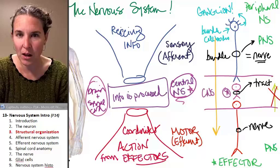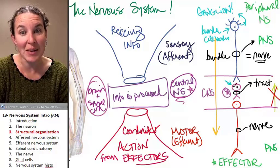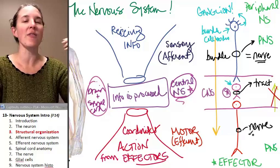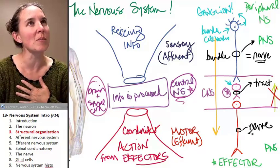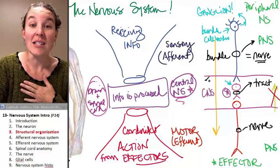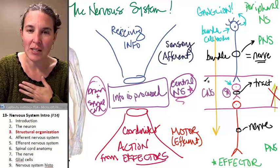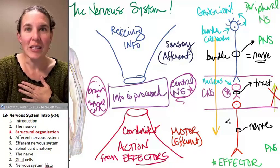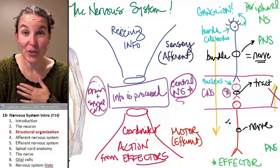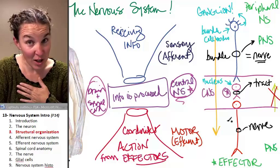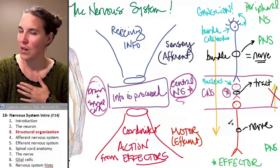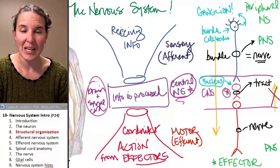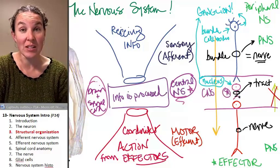A bundle of cell bodies in the central nervous system is not a ganglion — it's called a nucleus. A nucleus in the central nervous system contains many cell bodies, and each cell body has its own nucleus. So this is different from the organelle nucleus; this is actually a structure. It's exactly the same thing as a ganglion, just found in the central nervous system.